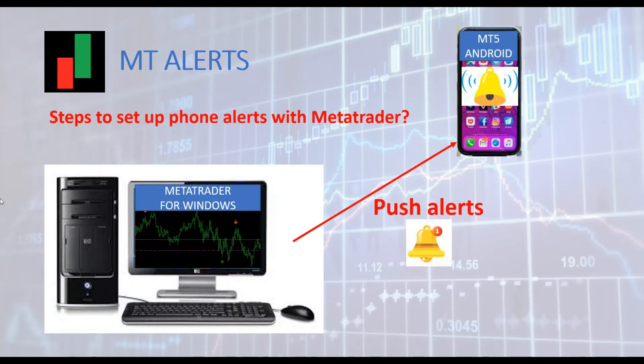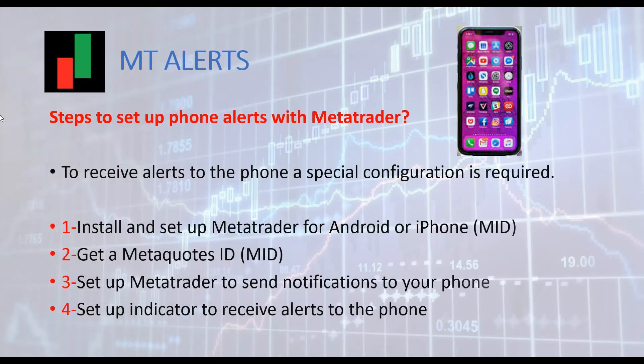Now let's move to push alerts. In this situation, alerts are generated by MetaTrader on your computer and sent to your mobile phone. You must have MetaTrader for iPhone or Android installed on your phone to receive push alerts. To receive alerts to your phone, you need a special configuration: first, install MetaTrader for Android on your phone; second, get a MetaQuotes ID; third, set up MetaTrader to send notifications to your phone; and finally, enable alerts in the indicator settings.